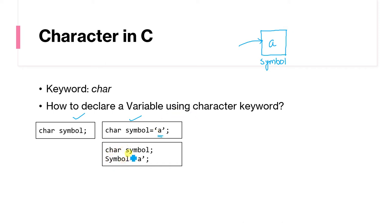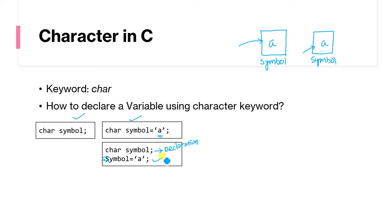When we declare char symbol, memory is allocated and named symbol. When the second line executes — symbol = 'a' — the value 'a' is stored in that location. The first line is called the declaration line, and the second line is called the initialization line. If both are written together as char symbol = 'a', that is called a declaration and initialization statement.